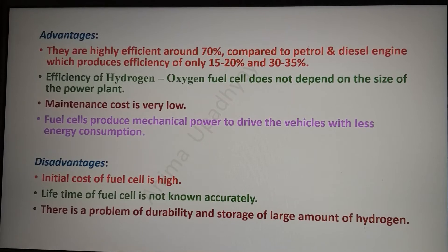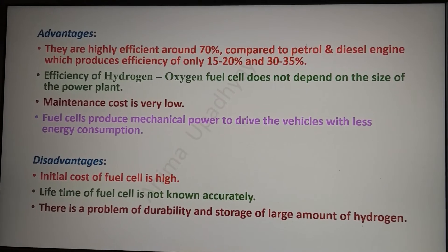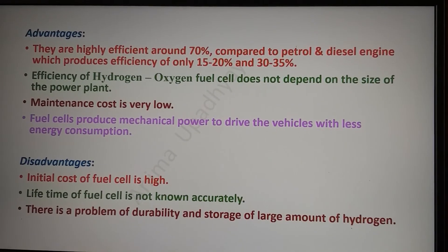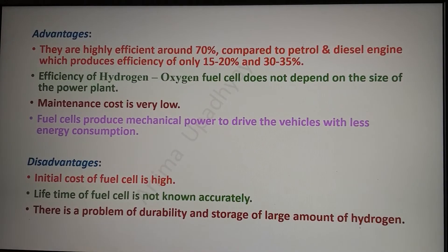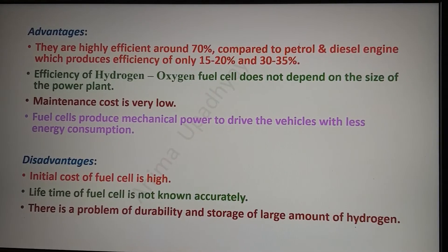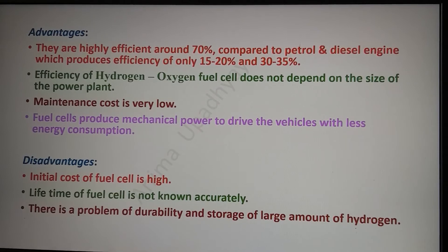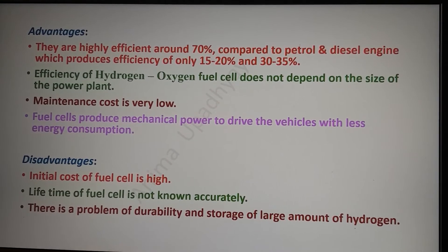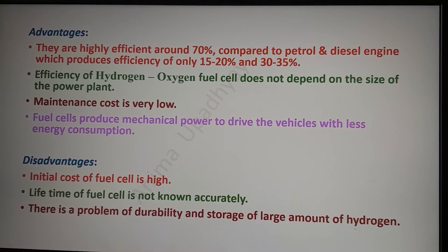There are many advantages of this fuel cell. The efficiency of the hydrogen-oxygen fuel cell is around 70 percent, which is very high compared to petrol and diesel engines — the efficiency of a petrol engine is just 15 to 20 percent and diesel is 30 to 35 percent. The efficiency of the hydrogen-oxygen fuel cell does not depend on the size of the cell. The maintenance cost is very low, and the mechanical power derived is used to drive vehicles.